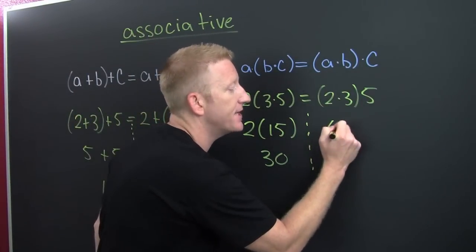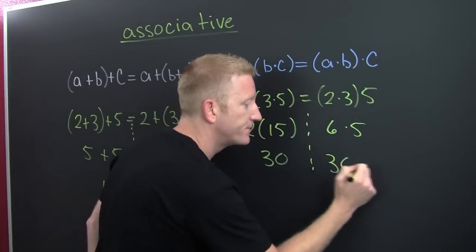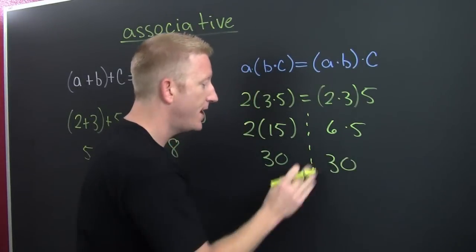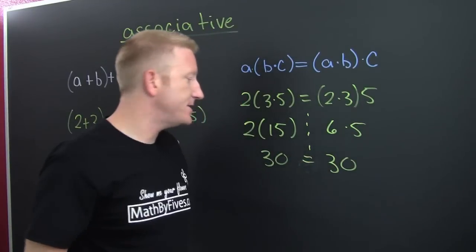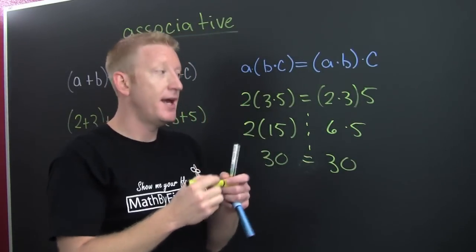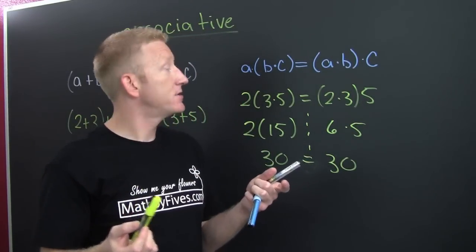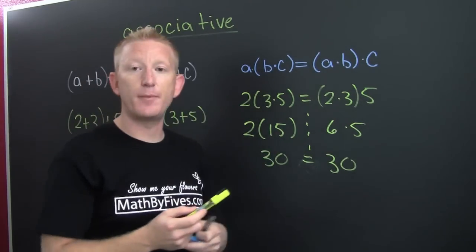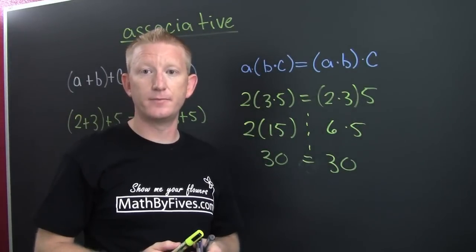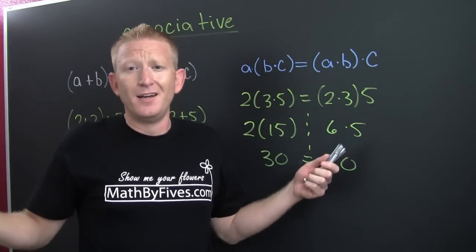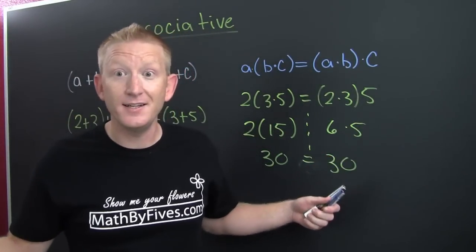Over here this is 6 times 5. Do we again get 30? We do. And we see here we end up with identity. We can change our groupings, and when we do, that's called the associative property — it's who they associate with.